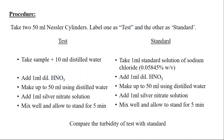These two — test and standard — have to be done simultaneously. In your standard Nessler's cylinder, take 1 ml of standard sodium chloride solution, add 1 ml of dilute nitric acid, make up the volume to 50 ml using distilled water, add 1 ml of silver nitrate. Mix well and allow to stand for 5 minutes. So basically, only the first step differs between the two: in the test you take the sample and add 10 ml of distilled water, while in the standard you take 1 ml of standard solution. After standing for 5 minutes, compare the turbidity of the test with that of the standard.